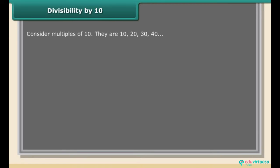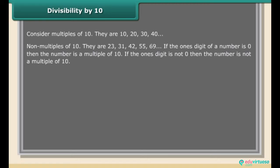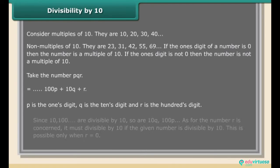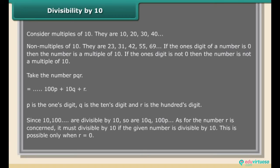Divisibility by 10. Multiples of 10 include 10, 30, 40; non-multiples include 23, 31, 42, 55, 69. If the ones digit of a number is 0, then the number is a multiple of 10. For a number PQR = 100P + 10Q + R, since 100P and 10Q are divisible by 10, the number is divisible by 10 only when R = 0.